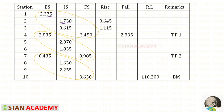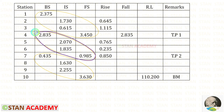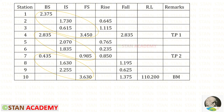For the first circle: subtracting consecutive readings gives positive values for the first two — so those are rises — and a negative value for the third, so that is a fall. For the second circle: subtracting consecutive readings gives positive values for all three — so those are all rises. For the third circle: subtracting consecutive readings gives negative values for all three — so those are all falls.